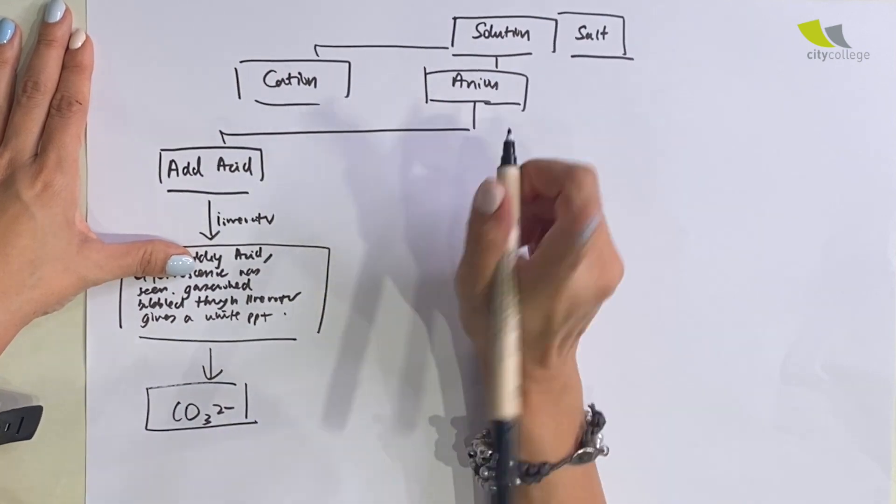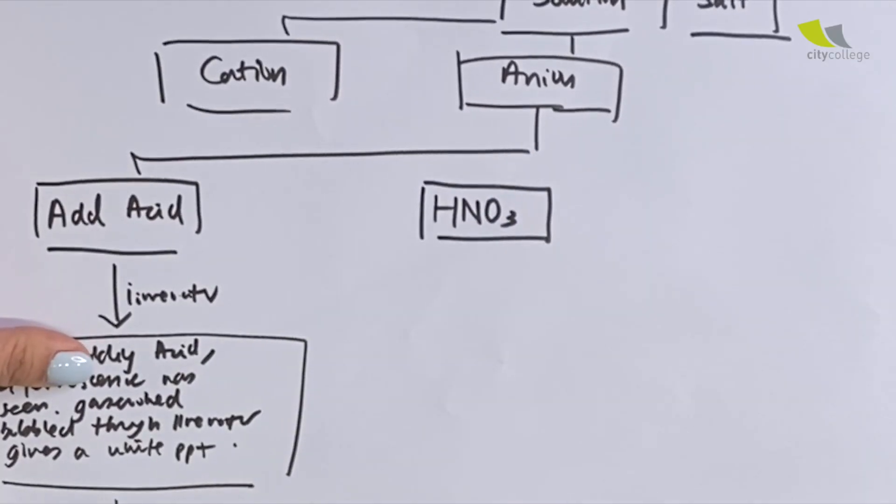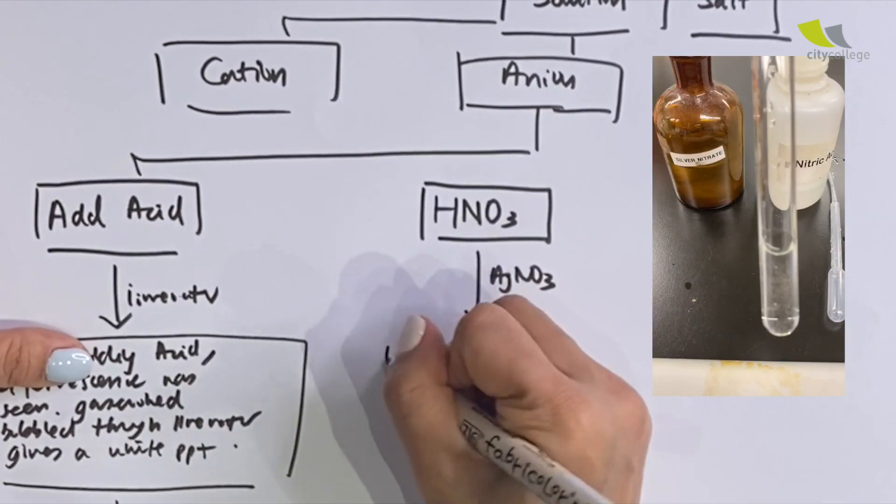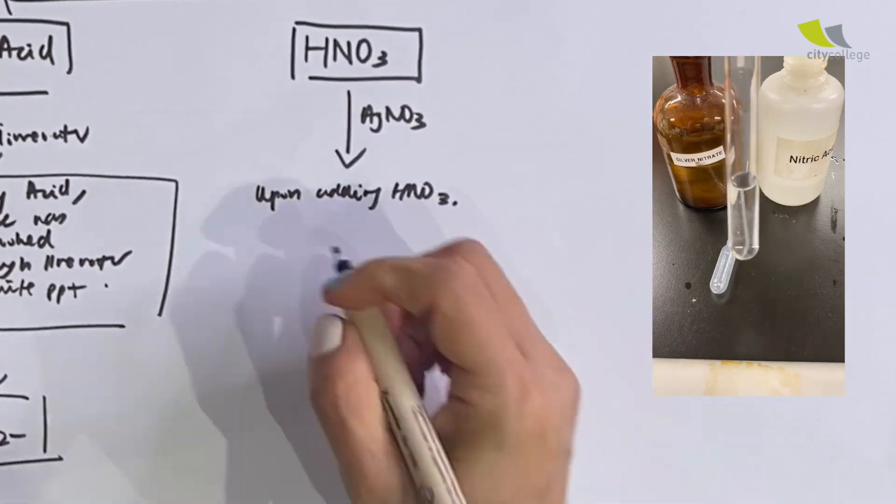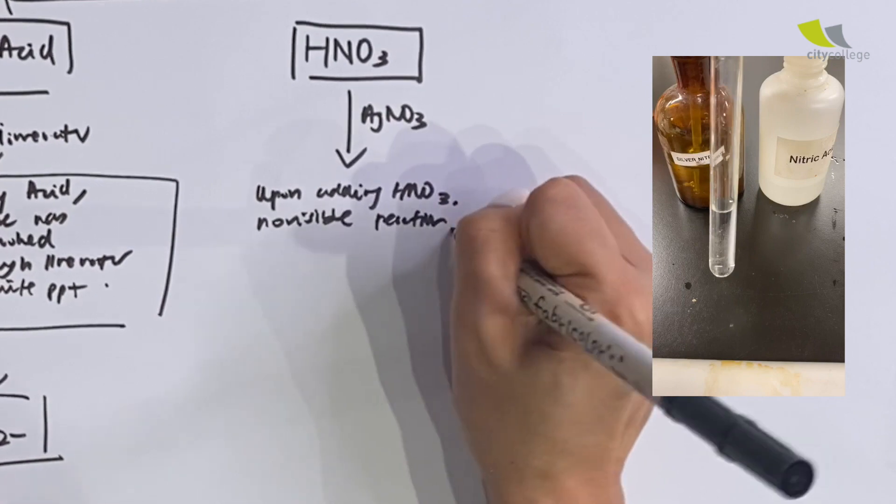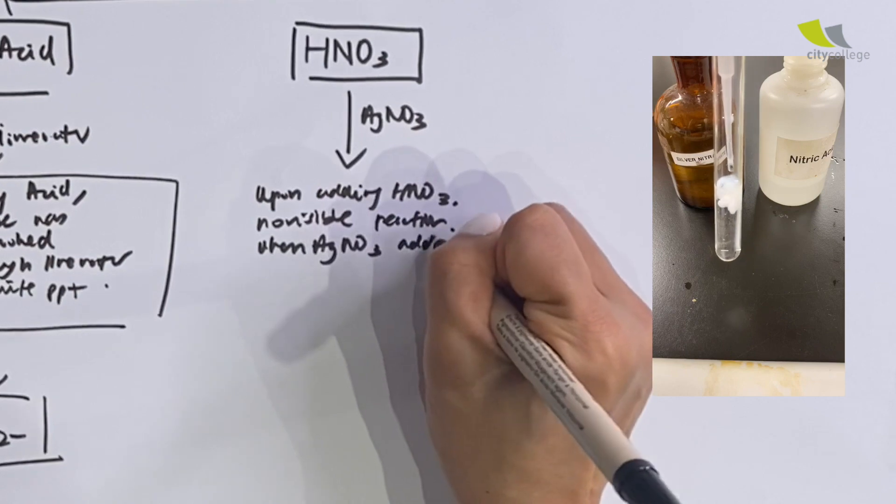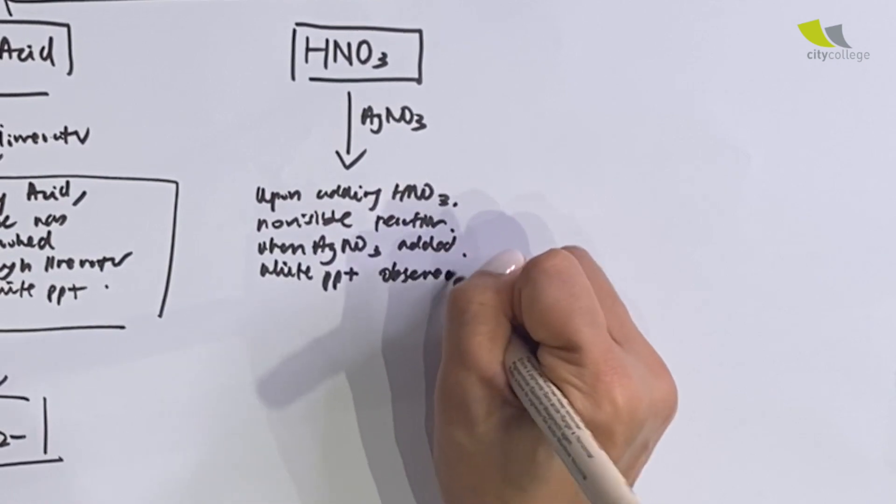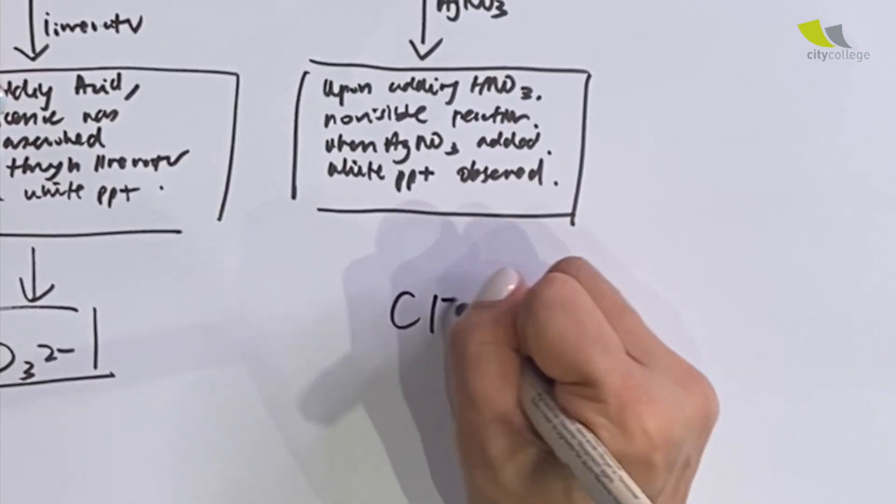Next, I also add an acid, but my acid is very specific. I'm adding nitric acid here, followed by silver nitrate. And upon adding HNO3, no visible reaction. When AgNO3 added, white PPT observed. And from here we conclude chloride is present.